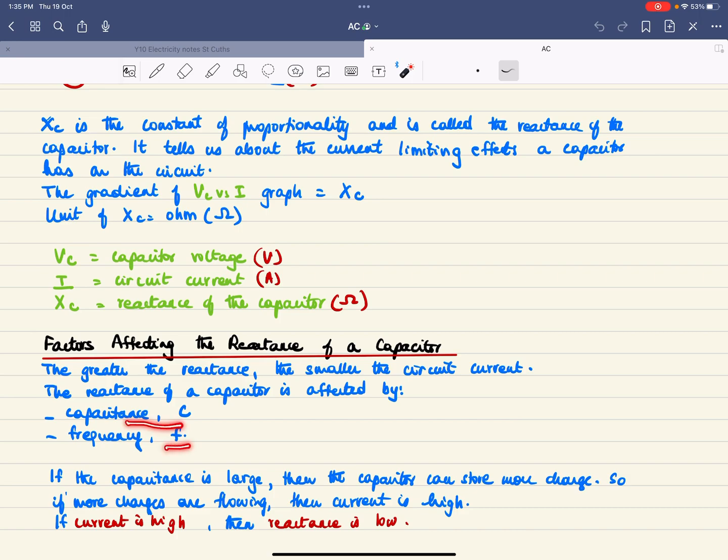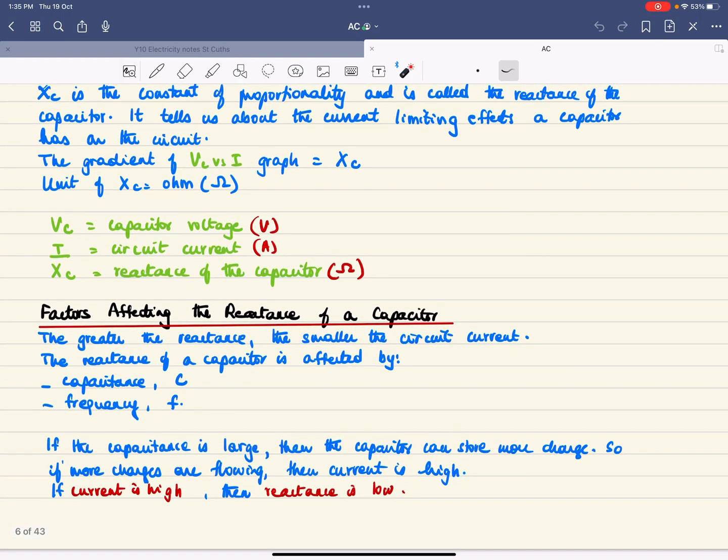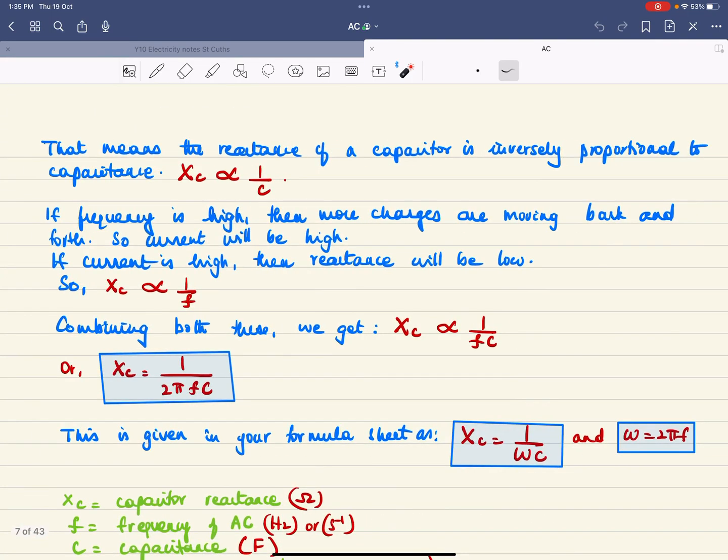If the capacitance is large, then the capacitor can store more charge. If there are more charges flowing, then the current is high. If the current is high, the reactance will have to be low. This means the reactance of a capacitor is inversely proportional to the capacitance.